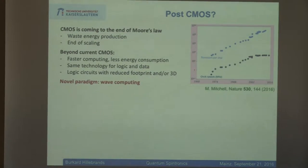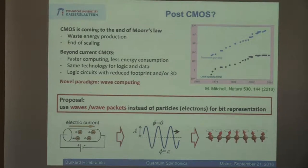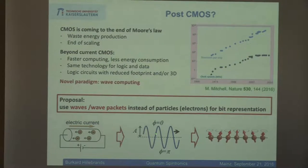That has been studied by many communities, and the question is simply: if you do wave-based computing, what kind of waves should you use? The novel paradigm is wave computing, and what I propose — what many others propose — is simply to use magnons, the quantum of the spin waves, as the wave particles. You see here a typical magnon in a nice animation. What is nice about waves is simply you have an amplitude and you have a phase, so you have two quantities which characterize it, not only just the particle number.